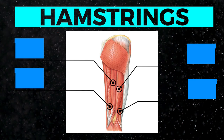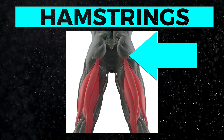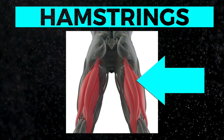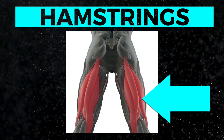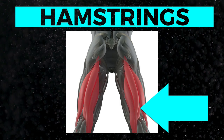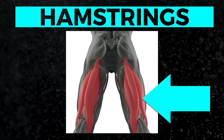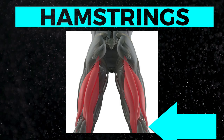The semimembranosis, semitendinosis, and long head of the biceps all originate on the ischial tuberosity of the pelvis. They cross the hip and run down along the femur, where they meet up with the short head of the biceps femoris, which originates on the backside of the femur. The semimembranosis and semitendinosis cross the knee joint medially, inserting on the medial portion of the tibia, while the biceps femoris heads cross the knee laterally, inserting on the lateral portion of the tibia and fibula. While the hamstrings are often collectively grouped as one muscle group, they're really more two — the medial hamstrings and the lateral hamstrings.